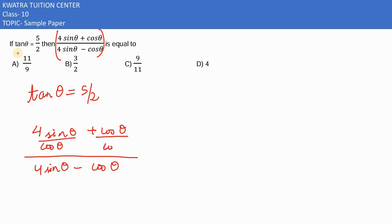Numerator divided by cos theta, denominator divided by cos theta. So you get here the value of 1. This is 1, and this here is sin theta by cos theta.